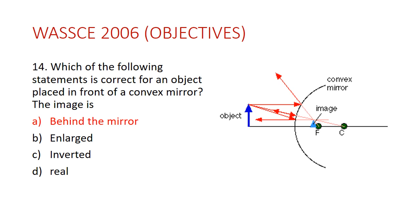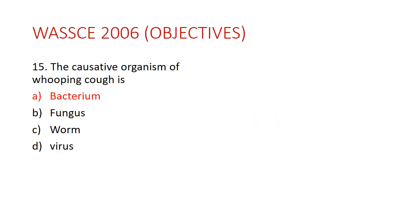Question fourteen: for an object placed in front of a convex mirror, which statement is correct? The answer is A — the image is behind the mirror. As shown in the diagram, the image formed is not enlarged, not inverted, and not real — it is a virtual image formed behind the mirror.